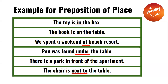"Under" is the preposition of place found in the sentence. The pen was found under the table. As you can see, the preposition of place in this sentence is used to show the location of the pen in relation to the location of the table.